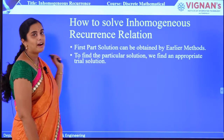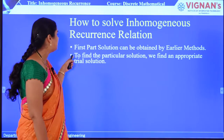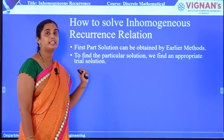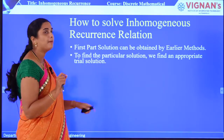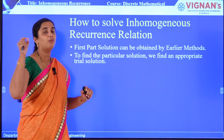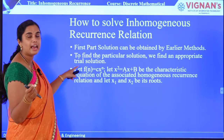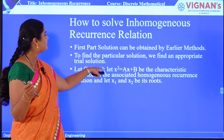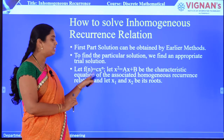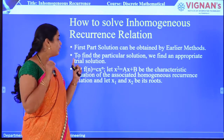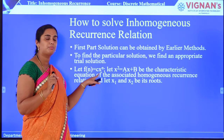The first part, as already said, can be found using earlier methods. To find the particular solution — the second part — we find an appropriate trial solution. How do you find this trial solution? We suppose F(N) is equal to C times X to the power of N. In most examples, you will get problems of this type only.